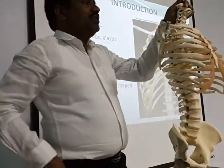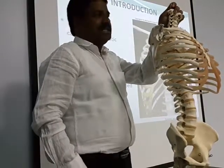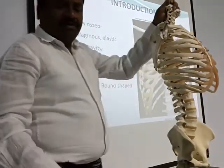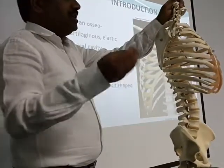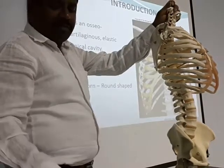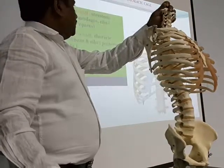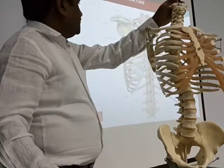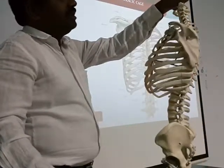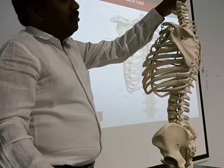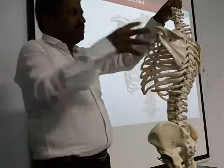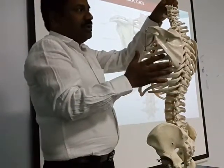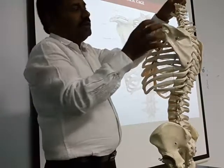The detailed features of these bones will be covered in the labs. On the posterior wall of the thoracic cage, two upper limb bones — the scapulae — are situated without any bony attachment to the ribs. Their only attachments are to the clavicle and laterally to the head of the humerus.